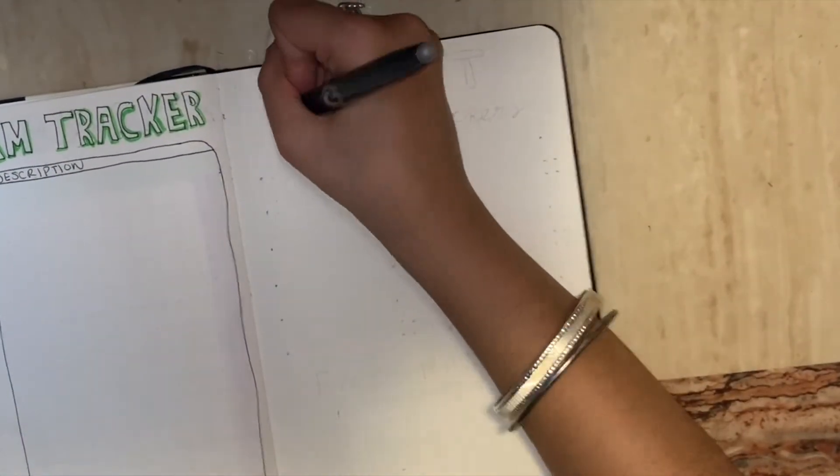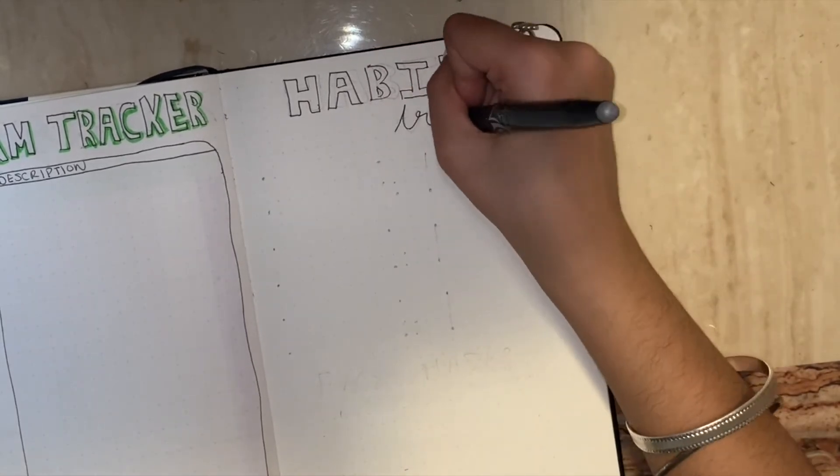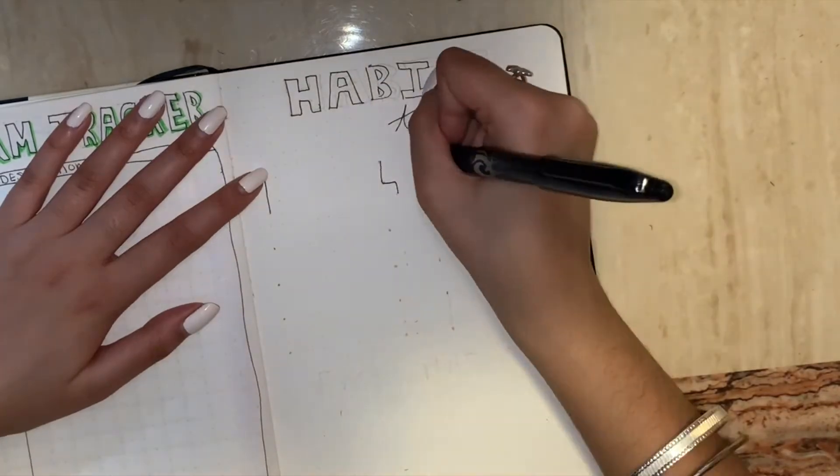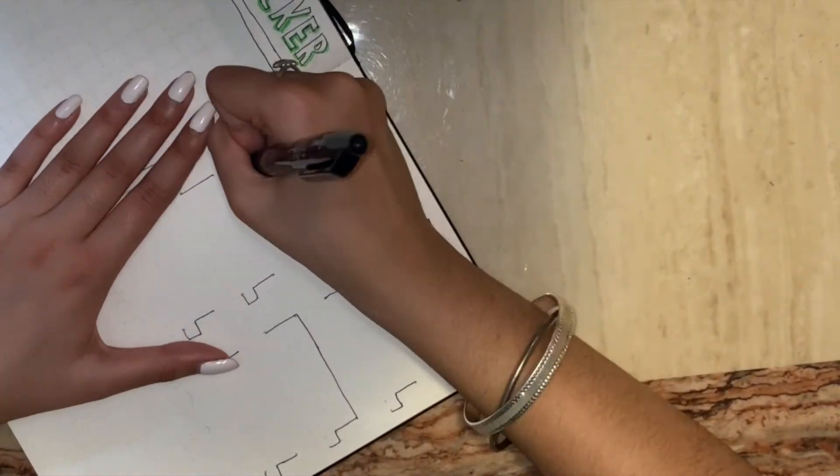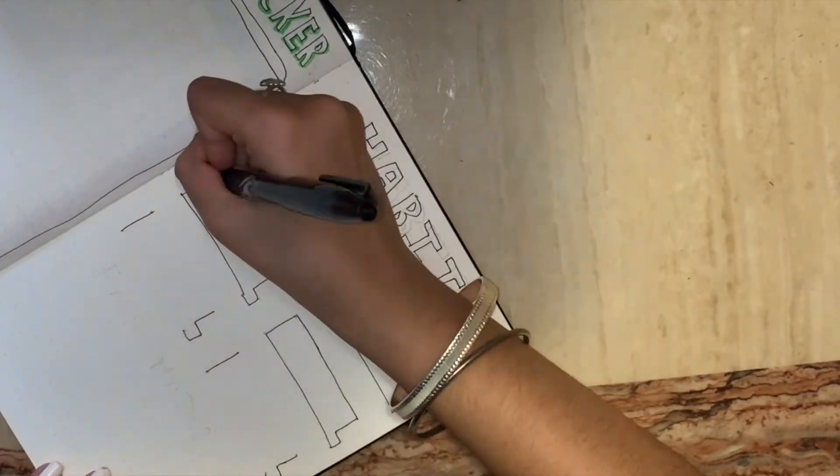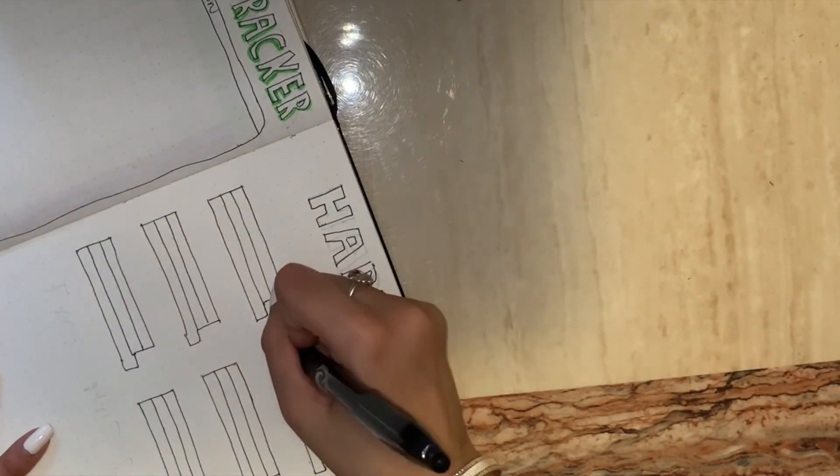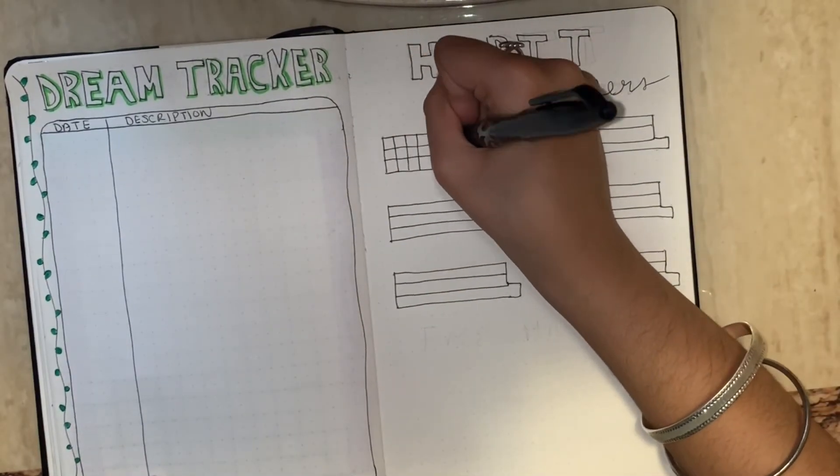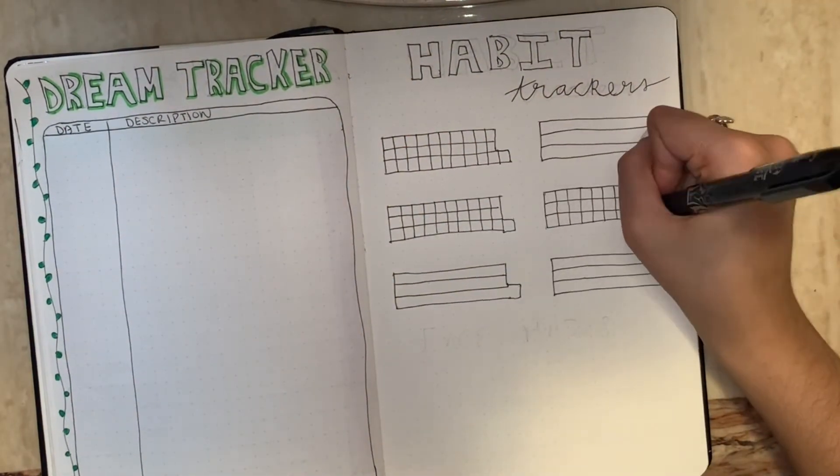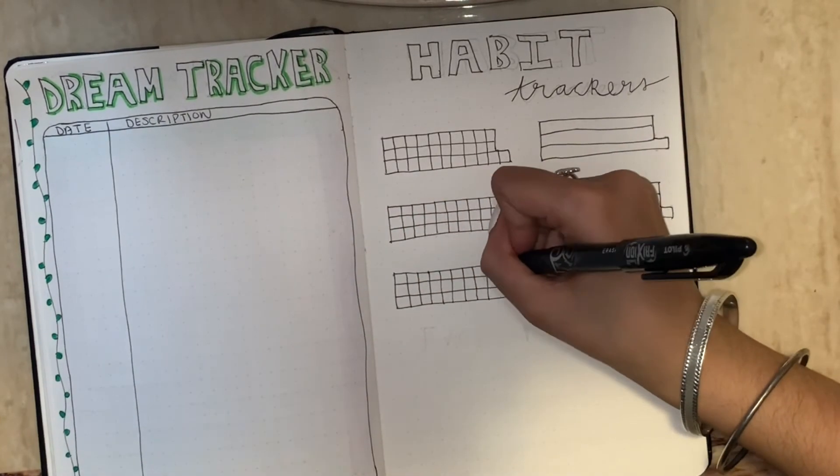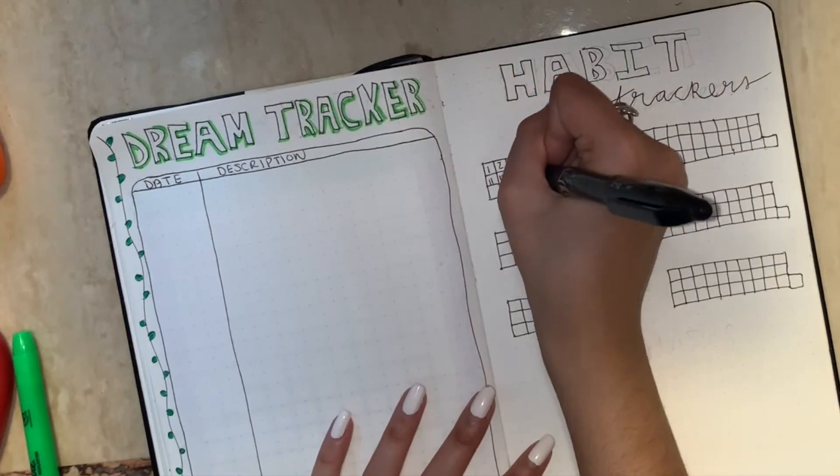I'm doing my habit trackers and I'm doing the same exact trackers that I did last month. So I'm adding 6 trackers, each with 31 squares in them.